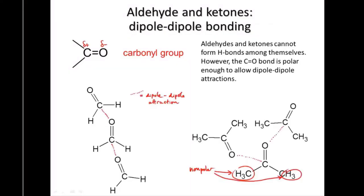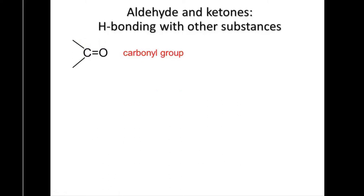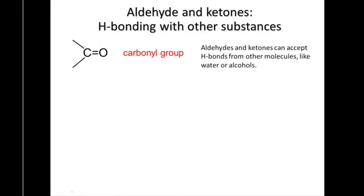Although aldehyde and ketone molecules cannot form hydrogen bonds with themselves, they are able to accept hydrogen bonds from other molecules. For instance, water molecules are able to form hydrogen bonds among themselves, since the OH bond is sufficiently polar for this to happen. In water, hydrogen bonds form between the lone pairs of the oxygens and the hydrogen of another molecule — it's the lone pairs on the oxygen that form hydrogen bonds.